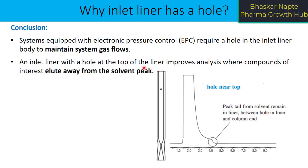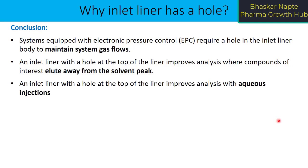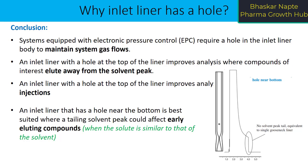An inlet liner with a hole at the top improves analysis where compounds of interest elute away from the solvent peak — the peak tail from the solvent remains in the liner between the hole and the column end. You can see a chromatogram for your understanding. This liner with the top hole is also preferable for samples containing aqueous diluent. An inlet liner with a hole near the bottom is best suited where a tailing solvent peak could affect early eluting compounds, or when the solute is similar to that of your solvent. If there is poor resolution between your solvent and analyte because of high solvent tailing, you can use a liner with a hole at the bottom and get improved resolution.